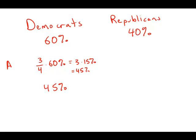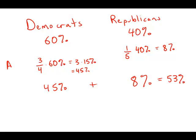Meanwhile, on the Republican side, 20% vote for candidate A. 20% is one-fifth. One-fifth of 40% is 8%. So 8% of the city consists of Republicans who vote for candidate A. If we want the total number of people who vote for candidate A, we have to add the Republicans and the Democrats together. 45 plus 8 is 53%. So 53% of the city votes for candidate A, and this is answer choice B.